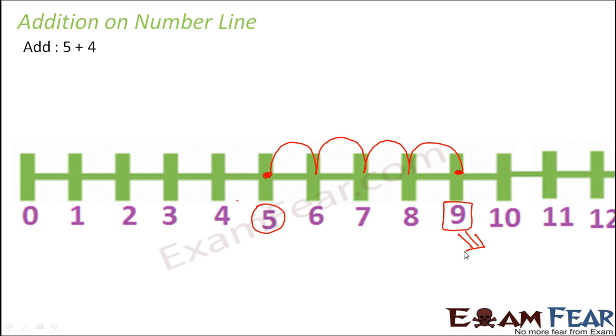So what does that mean? That means 5 plus 4 is 9. So what we need to do is first see to which number you want to add. 5 is the number to which you want to add 4, so locate 5.